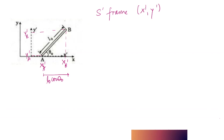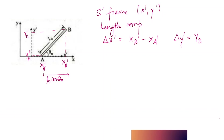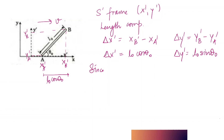Writing down the length components in the S' frame: Δx' = xB' − xA', and similarly Δy' = yB' − yA'. So Δx' = l₀cosθ₀ and Δy' = l₀sinθ₀.